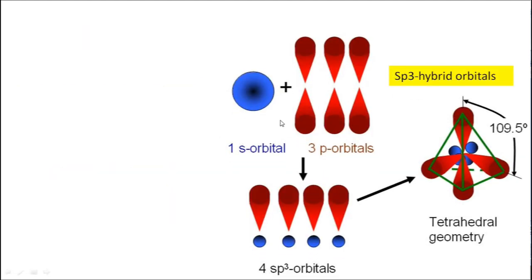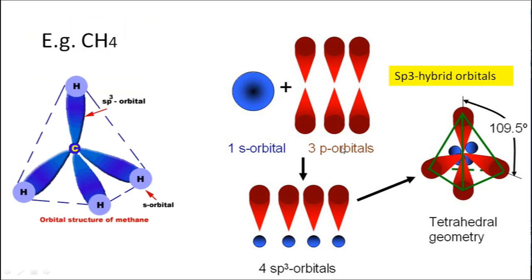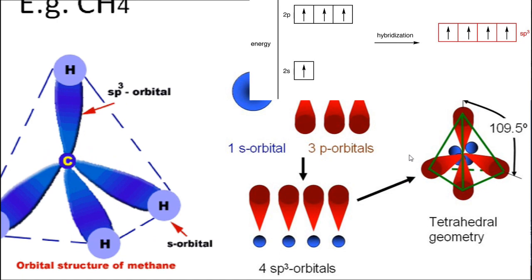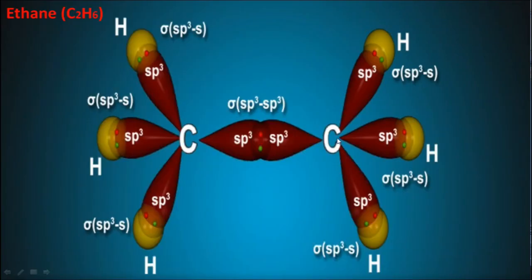As an example, in methane, one S and three P atomic orbitals of carbon take part in hybridization, giving a tetrahedral structure in which the bond angle between each hybrid orbital is 109.5 degrees. Similarly, in ethane, each carbon atom is SP3 hybridized, having four SP3 hybrid orbitals, in which one SP3 hybrid orbital is bonded with another carbon atom and three SP3 hybrid orbitals are bonded with hydrogen atoms.